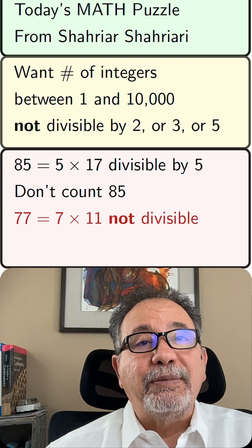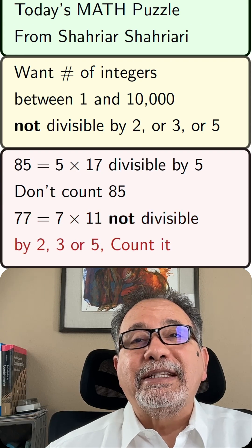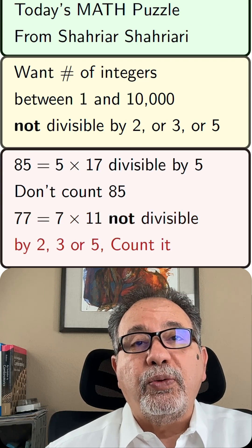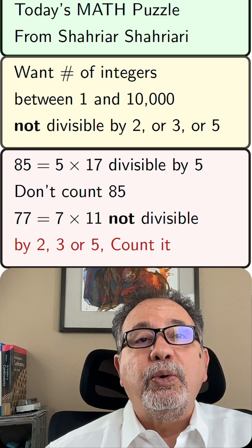77, which is 7 times 11, is not divisible by 2, or 3, or 5. Same as saying you can't factor 2, or 3, or 5 from 77. So 77 is one of the numbers we want to count.